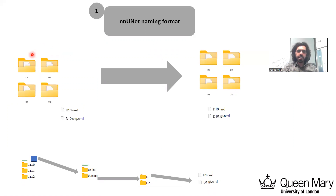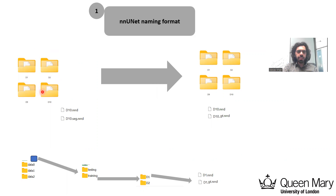If we have any dataset — for example, the segmentation of IOTA dataset from KaiChallenge2023 — we can see there will be one folder named 'segmentation of IOTA', and inside that folder there are folders for each subject like D1, D2, D10. If we click on each of these folders, we have one image and one ground truth. The problem is NNUnit can't identify which one is the image and which one is the ground truth.